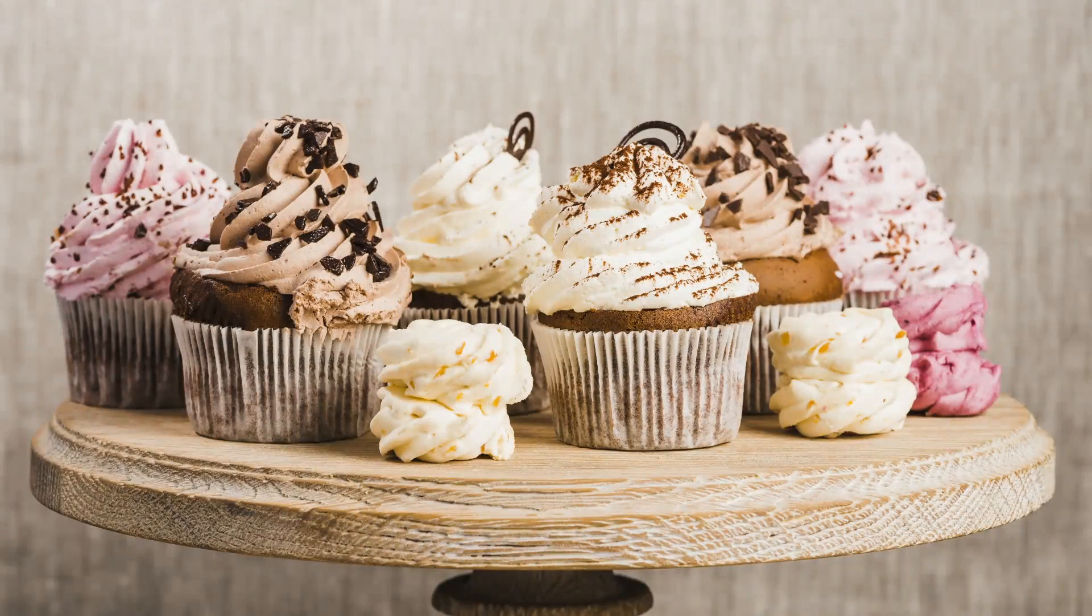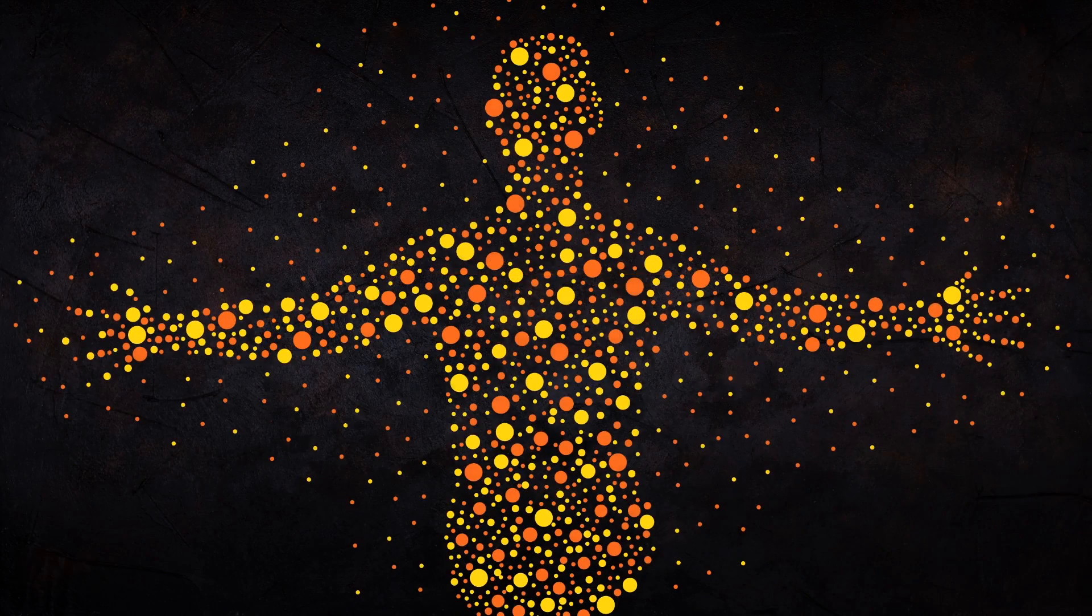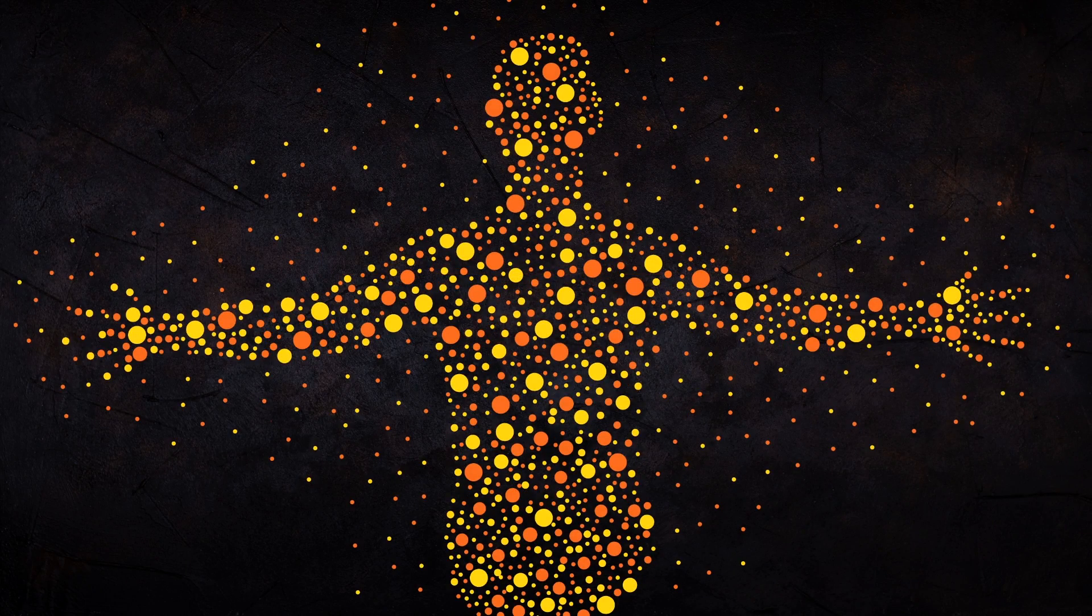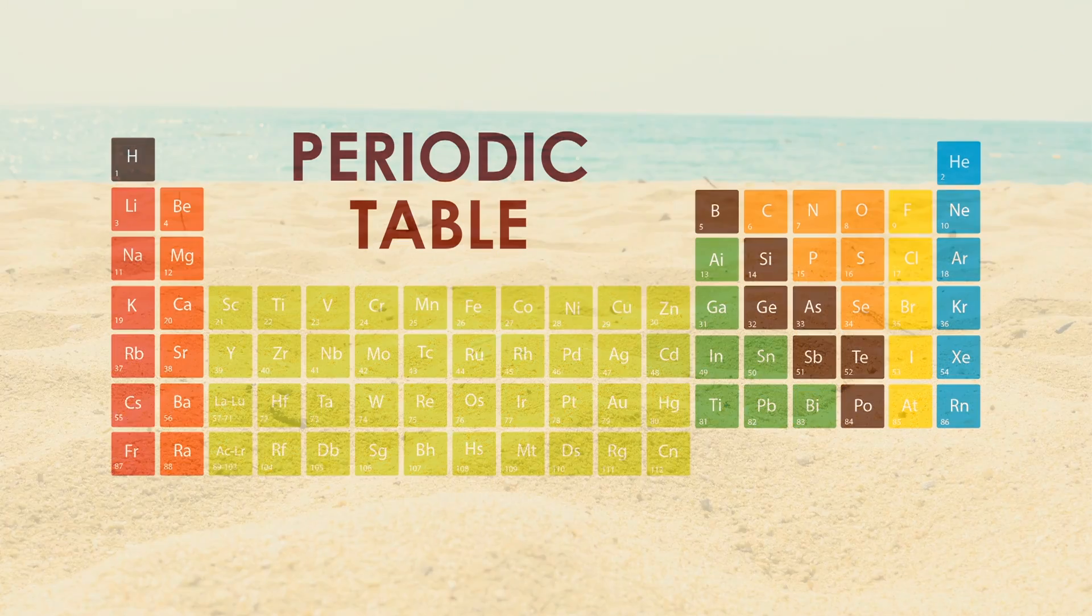1. Cupcakes to share. 2. Books on your shelf. 3. Ideas you thought of between 917 and 941. 4. Atoms in your body. 5. Grains of sand on the beach.